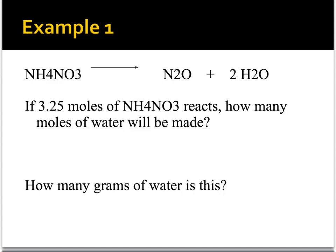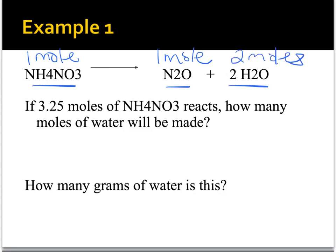Looking at this equation — NH4NO3, ammonium nitrate, decomposes to form dinitrogen monoxide and water — according to the law of conservation of mass and matter, one mole of ammonium nitrate decomposes to form one mole of dinitrogen monoxide and two moles of water. The question says I'm reacting 3.25 moles of ammonium nitrate, and I want to know how many moles of water are going to be made. I don't care about the dinitrogen monoxide, so I'm crossing it off.